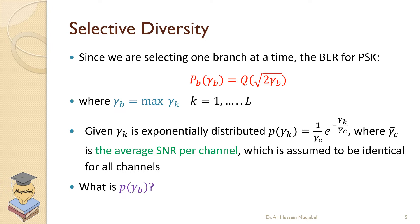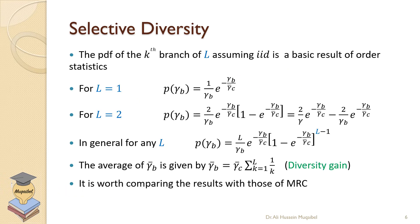For selective diversity, the probability of error for phase shift keying is given by a function of gamma_b, where gamma_b is the maximum SNR across all branches, and is exponentially distributed with average gamma_c per channel. The distribution of gamma_b when selecting the best branch is solved using ordered statistics. The PDF of the best branch out of L branches, assuming i.i.d., is a basic result of order statistics, and for L branches we can substitute into the general expression to find the diversity gain.